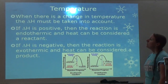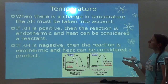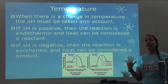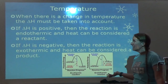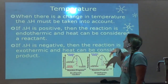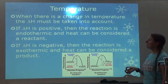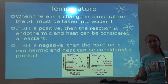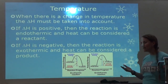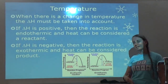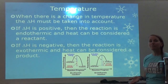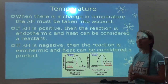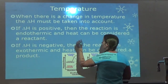When there's a change in temperature, delta H must be taken into account. Is it positive or negative? If delta H is positive, that means the reaction is endothermic, and you can consider heat a reactant. So if you can figure out if heat is considered a reactant or a product, then you can use the same method of figuring out the shift as with concentration.